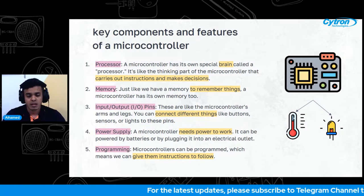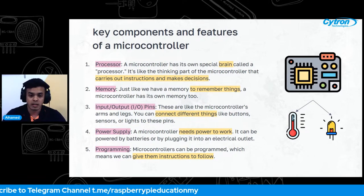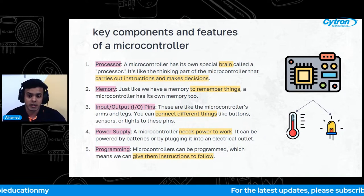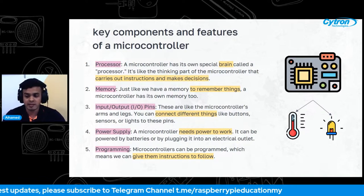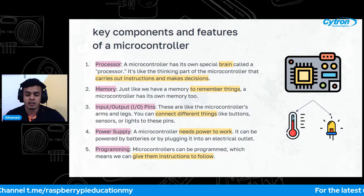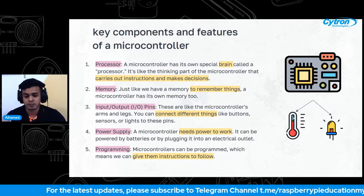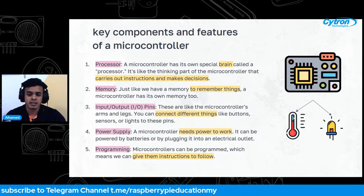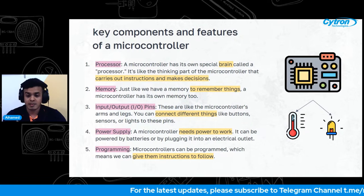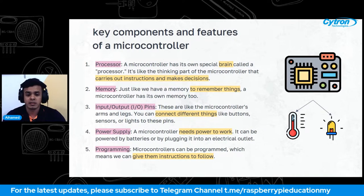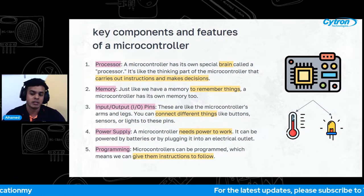Then we have input and output pins. Imagine a microcontroller as a little device with arms and legs — these are called I/O pins, and they allow the microcontroller to connect and communicate with the outside world. Just like we use our hands to interact with objects, the I/O pins let the microcontroller interact with electronic components like buttons, sensors, lights, and motors. For example, if you connect an LED to an I/O pin, the microcontroller can send signals to turn it on or off, controlling lights, sounds, and movement.